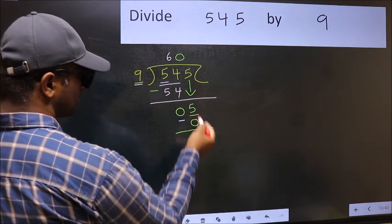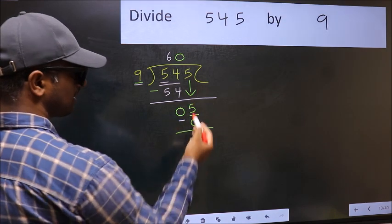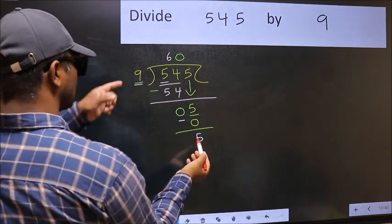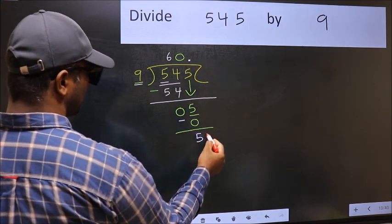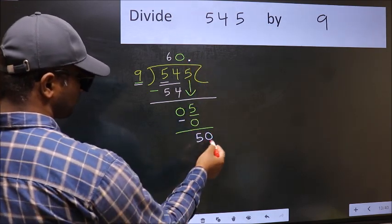Over here, we did not bring any number down, and 5 is smaller than 9. So now you can put dot and take 0. So 50.